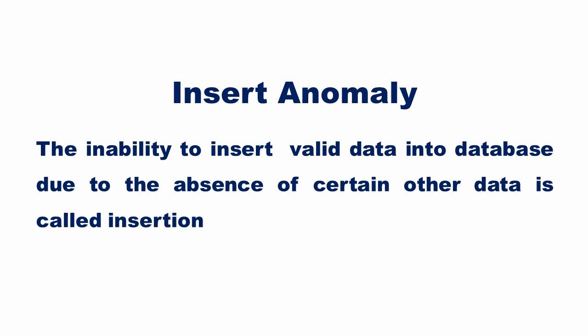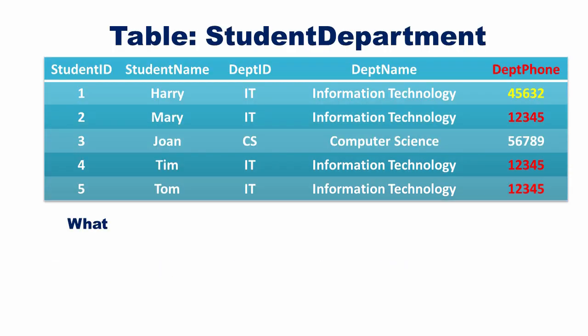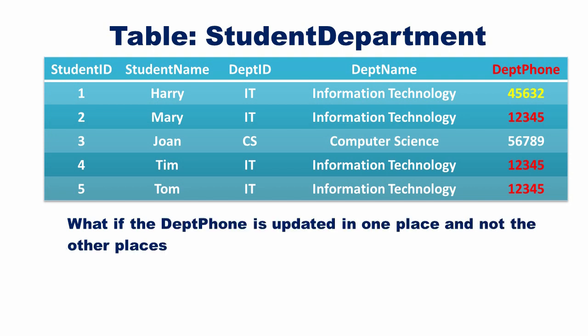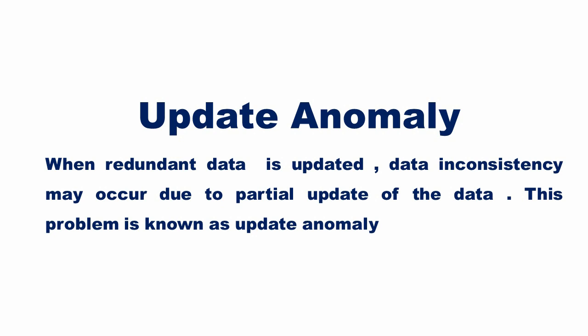This problem is known as insertion anomaly. The inability to insert valid data into a database due to the absence of certain other data is called insertion anomaly. Now assume that the phone number of the Information Technology department has been changed. To update the value, we have to update multiple rows. What if the department phone is updated in one place but not in other places? The same object would then have different values.